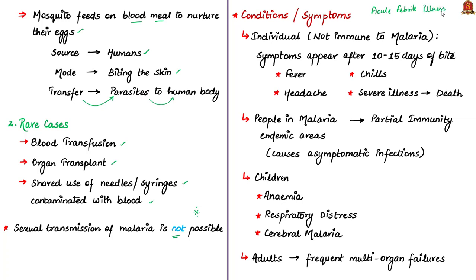In an individual who is not immune to malaria, symptoms usually appear 10 to 15 days after the infective mosquito bite. The first symptoms such as fever, headache and chills may be mild and difficult to recognize as malaria. If not treated within 24 hours, malaria can progress to severe illness and often leads to death. People residing in malaria endemic areas may develop partial immunity, causing asymptomatic infections. Children with severe malaria frequently develop severe anemia, respiratory distress or cerebral malaria, while in adults multi-organ failure is also frequent.